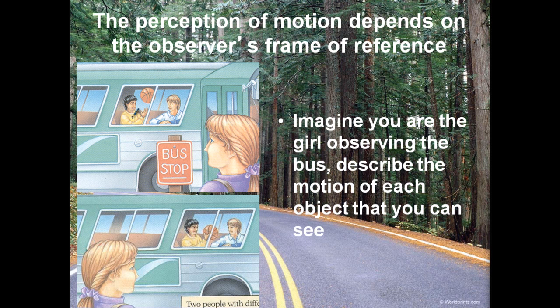So now imagine that you are the girl observing the bus. Describe the motion of each object that you can see. This is where it gets a little cool. For each one of these guys, this ball right here appears to go up and down because they are both inside the bus. That's the reference frame of the bus. So if you're in a car, try it. Throw a tennis ball or something up in the air. It just seems to go straight up and straight down.